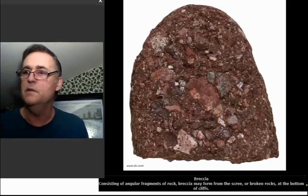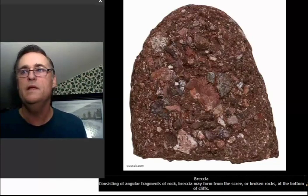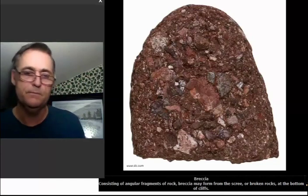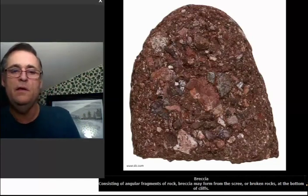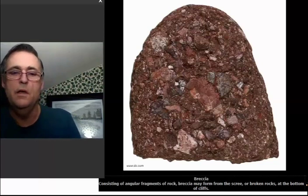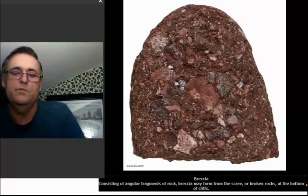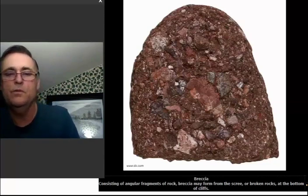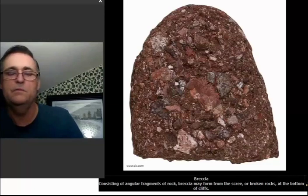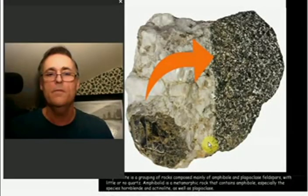This is breccia. Consisting of angular fragments of rock, breccia may form from scree or broken rocks. Scree is broken rocks. At the bottom of cliffs. Broken rocks, mud, all that stuff. Scree is garbage rocks.